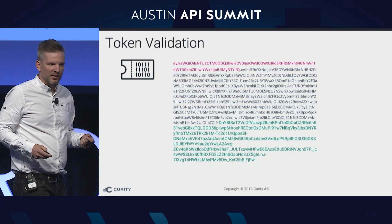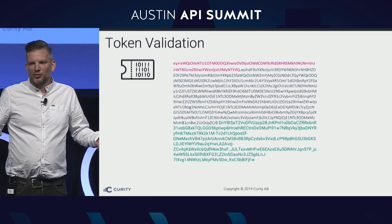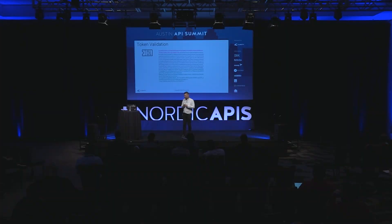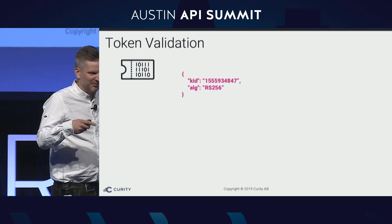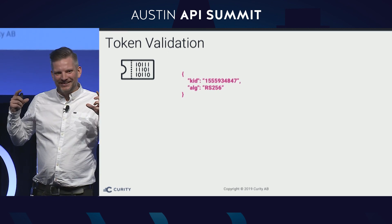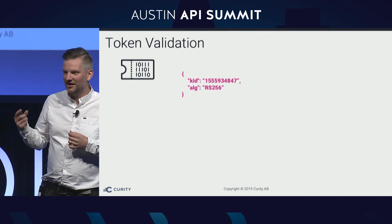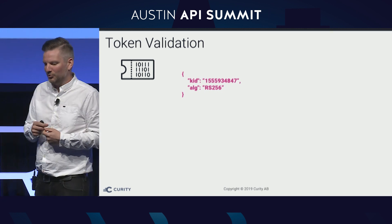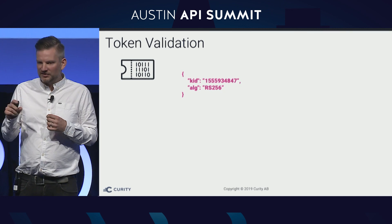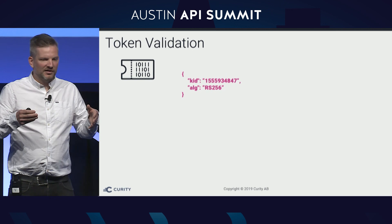Now let's talk about token validation — what it means for the API to validate the JWT it receives. The token is clear text even if it doesn't look like it. It consists of three parts: the pink part is the header, the grayish part is the payload, and the green is the signature — all Base64-encoded and concatenated with a dot character. Decoding the header reveals a key ID and an algorithm describing how the token was hashed. That key ID points to the exact key that signed the token.